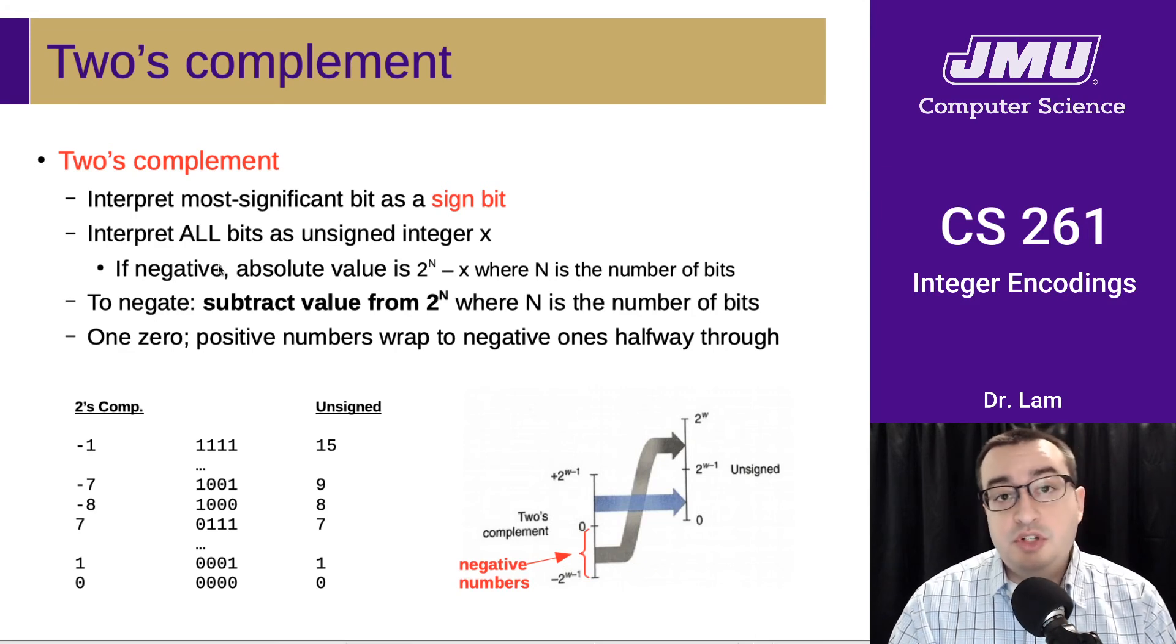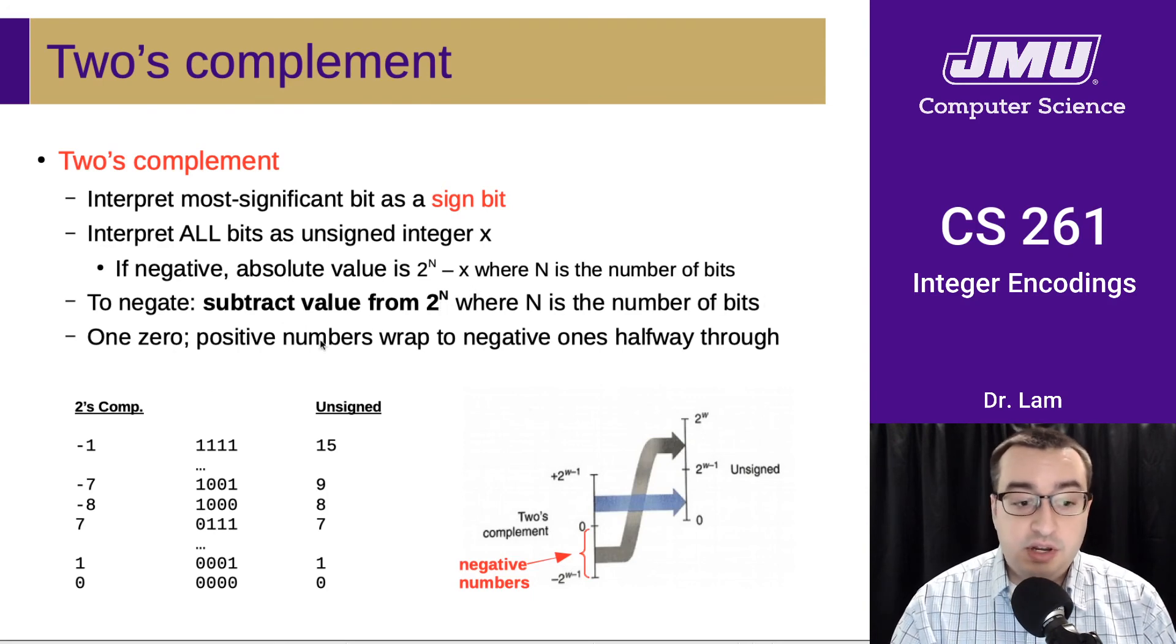So what this means is that in order to negate a number, you have to subtract its value from 2 to the n, where n is the number of bits. So here we have some 4-bit numbers, so 2 to the n is going to be 2 to the 4, which is 16.